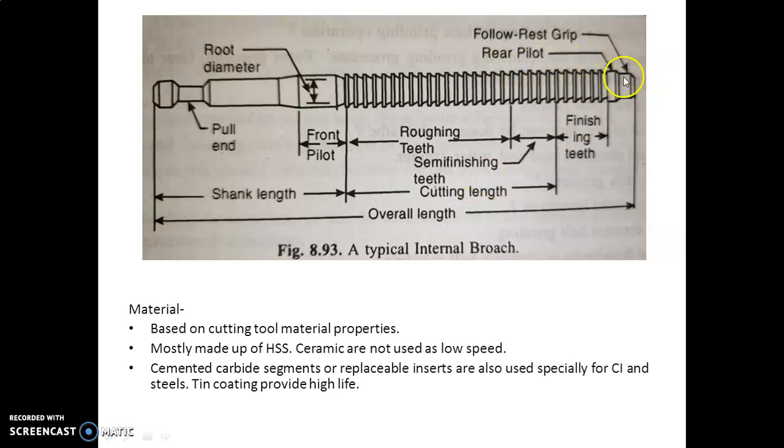Here, rear pilot is represented and follow-rest grip is represented. About internal broach - a typical internal broach is shown in this diagram. To machine an internal hole, the broach is gripped by a puller at the shank end. The front pilot centers the broach in the hole before the teeth begin to cut. The front taper, that is 5 to 20 mm, facilitates the insertion of the front pilot in the hole.